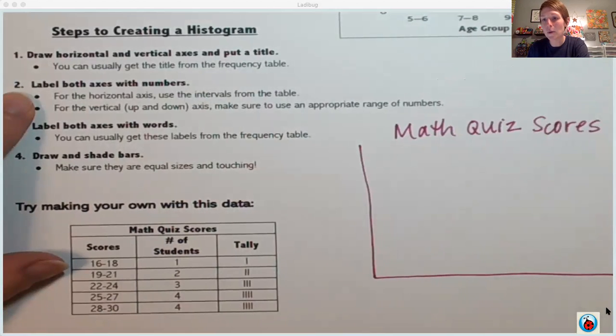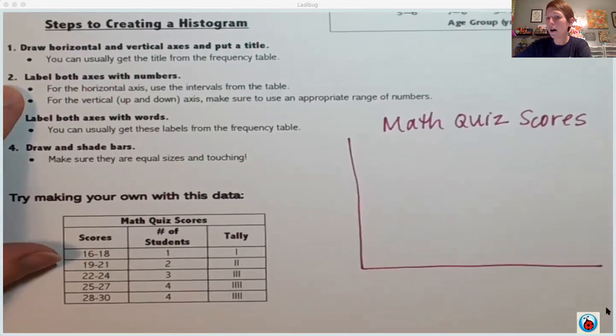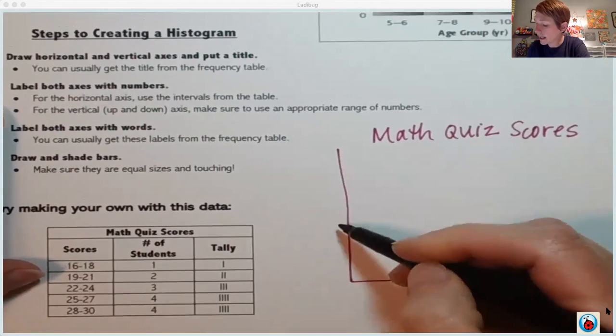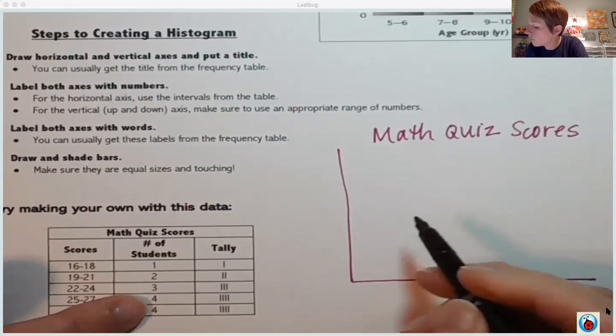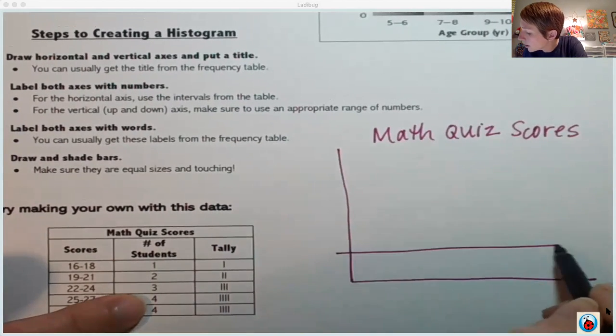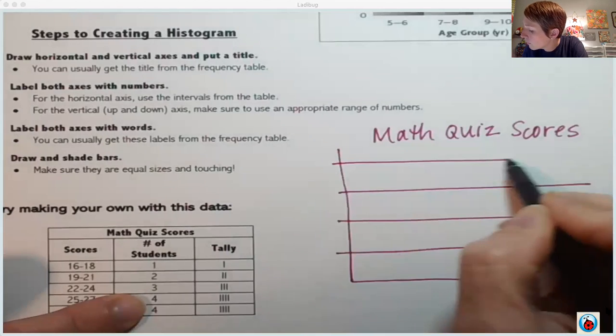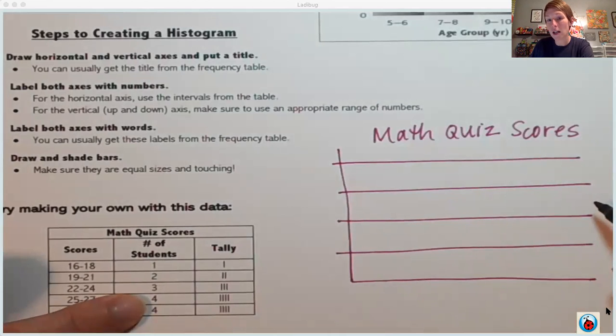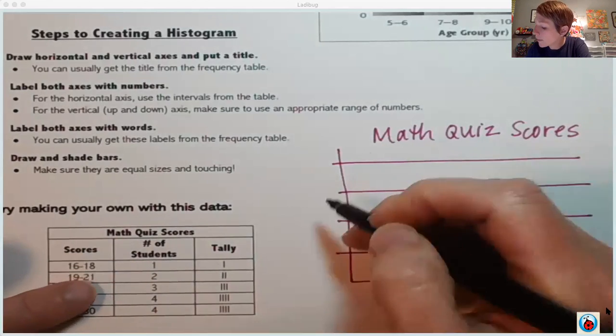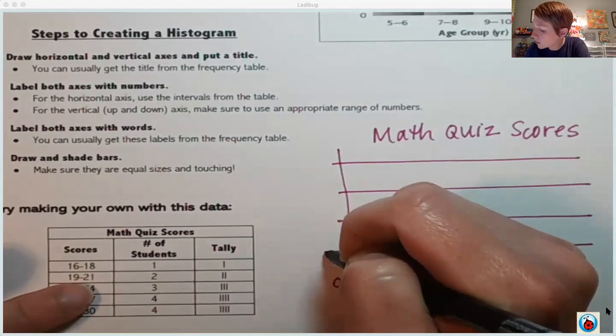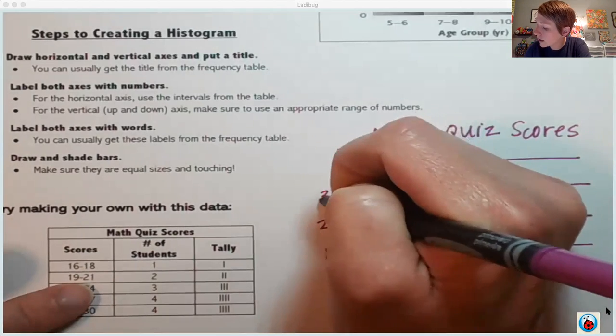Next it says to label my axes with numbers. Well on the left side over here I see that my data is between one and four. So I'm going to go one, two, three, four. I'm drawing lines all the way across so that I have lines like they had on the one at the top of the notes where my bars are going to stop. That is zero at the bottom, one, two, three, and four.